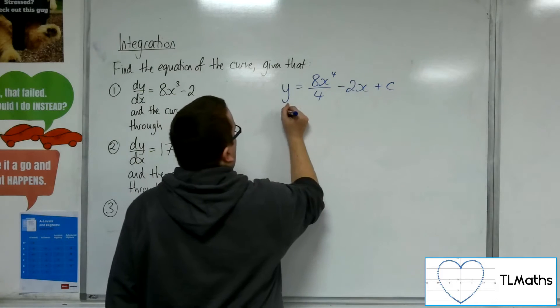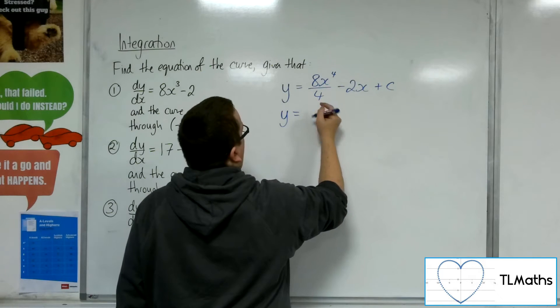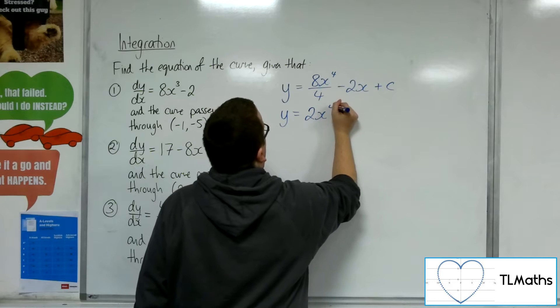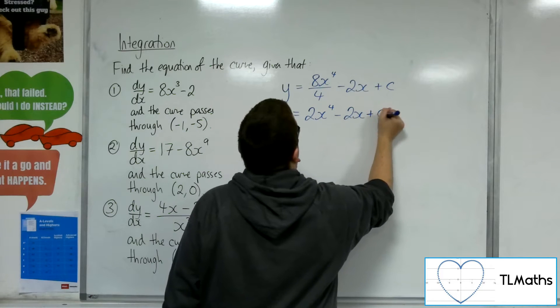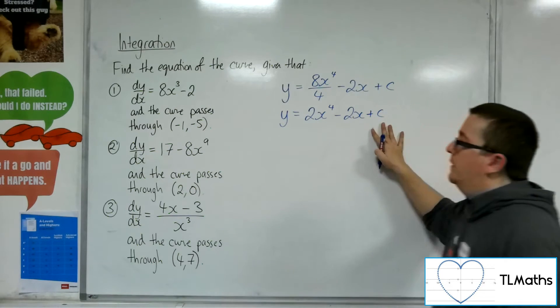Let's tidy that up. So the 8 over 4 simplifies to just 2. So here is my general solution of the curve.